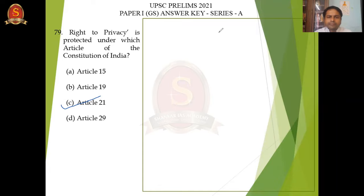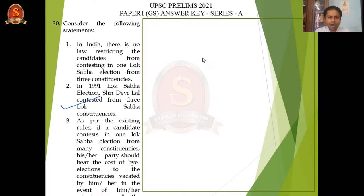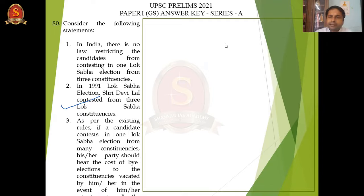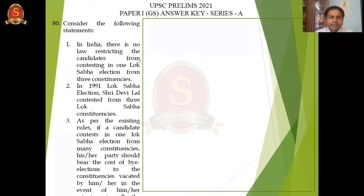Next: in India, there is no law restricting candidates from contesting in one Lok Sabha election from three constituencies. Earlier, candidates could contest in any number of constituencies, but the election commission framed a rule — now you can contest only in a maximum of two constituencies. So the first statement is wrong. Regarding the 1991 Lok Sabha election, Shri Devi Lal contested from three Lok Sabha constituencies — that is a factual matter. After that, the election commission amended the rules so people can stand in only two constituencies.